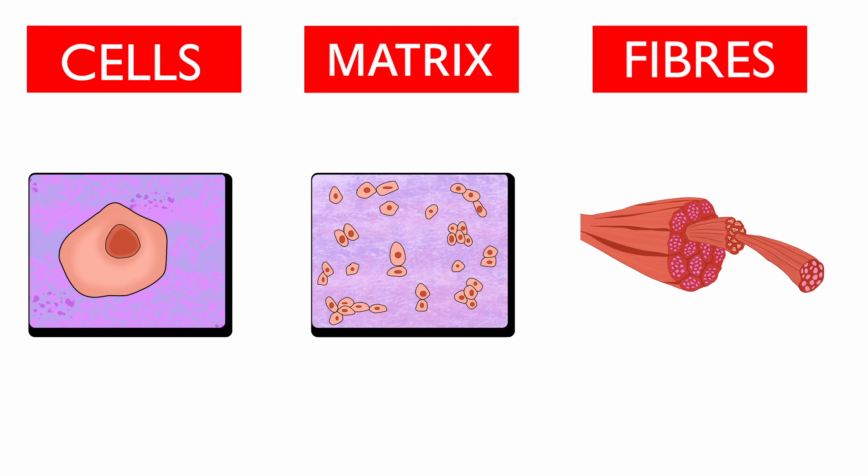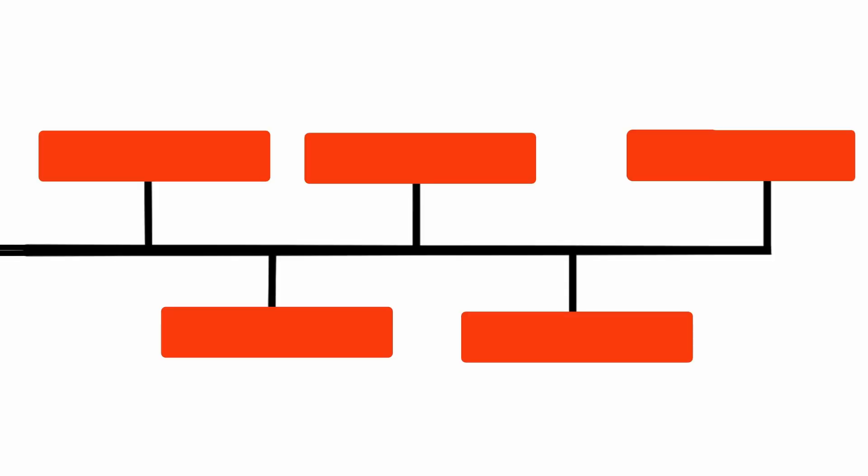We will start by understanding the different cells present and their functions. There are five different types of cells: fibroblast cells, plasma cells, macrophages, mast cells, and adipocytes.